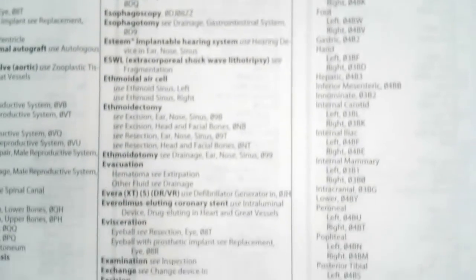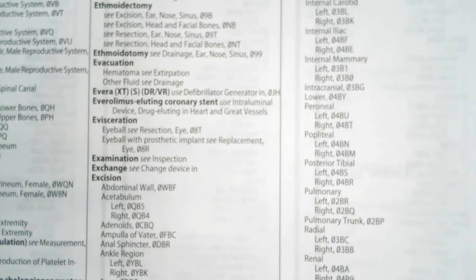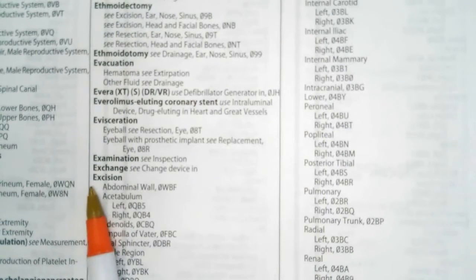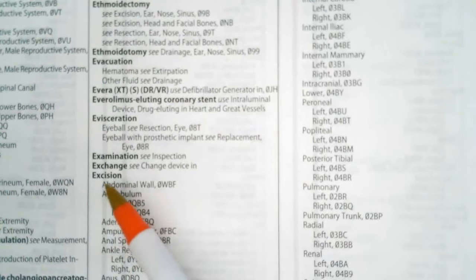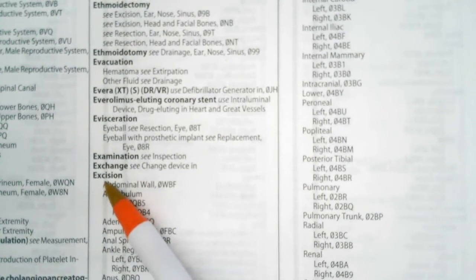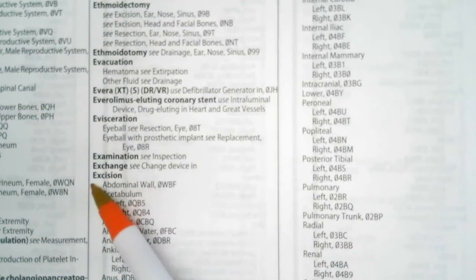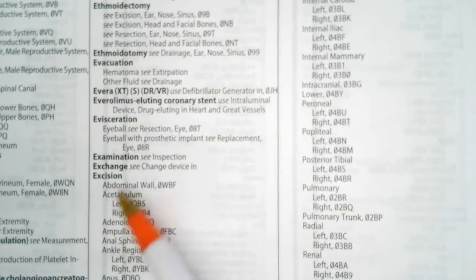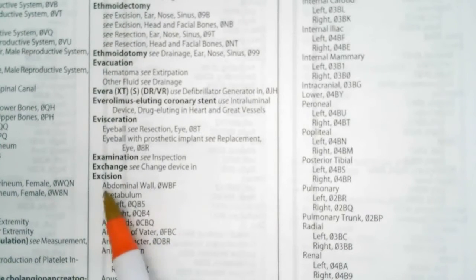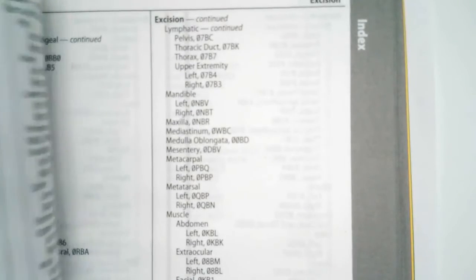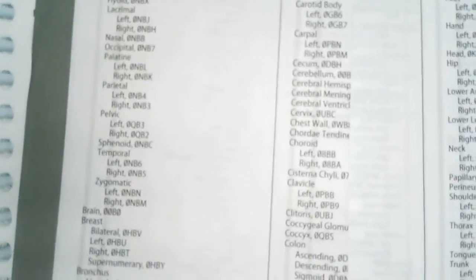This is excision because the physician only took out part of the body part. So under excision, we go in alphabetical order. Notice in my version of the ICD-10 PCS, I have a first gray line here — excision is in bold print, and then I have faint gray lines. We always start with the first gray line, and I'm looking for breasts. I see artery and arm, so in this particular case I have to turn the page to locate breasts.